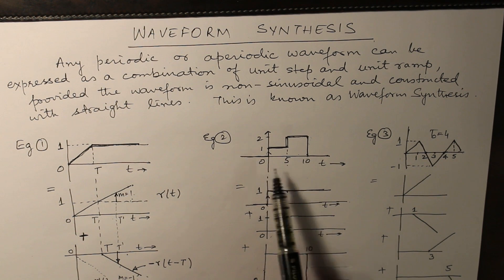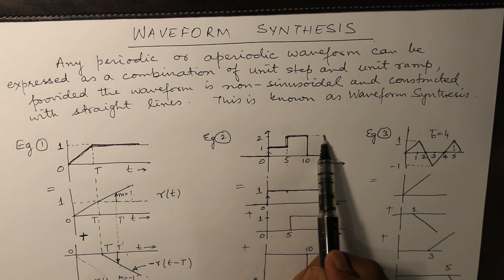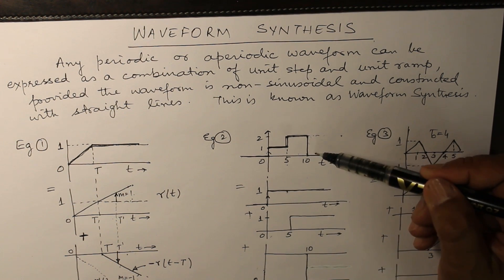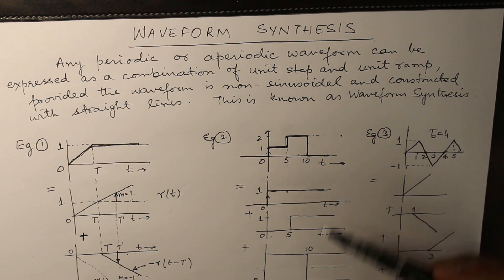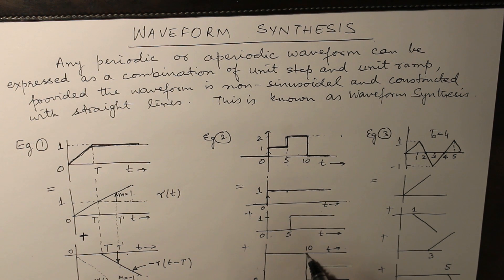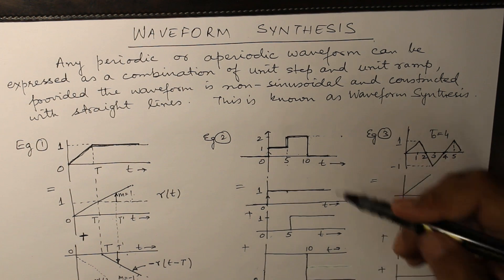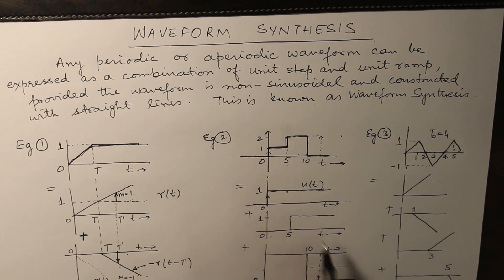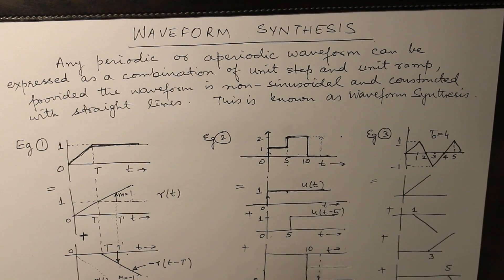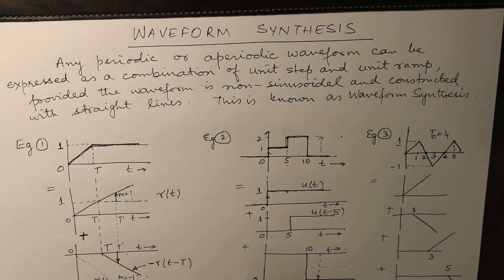When you add these two waveforms it becomes the required stepped shape and continues. After that, the portion continuing for all time greater than 10 has to be brought down to 0. At t equal to 10 we subtract — that is, we add a negative 2 value — so that all those values get neutralized. The result is u(t) plus u(t minus 5) minus 2·u(t minus 10).